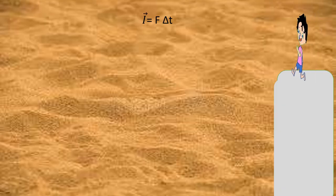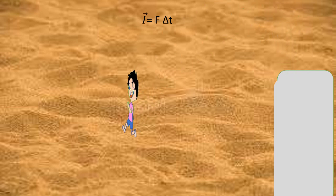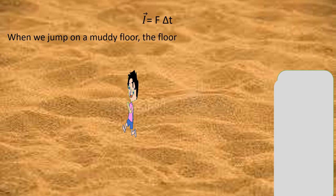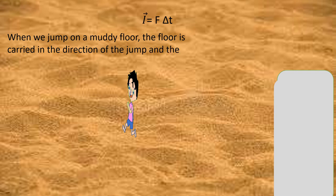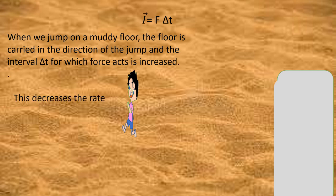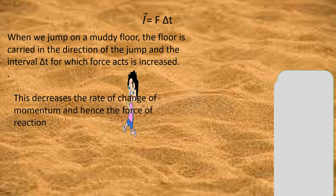Let's see another example. When you jump from a high place onto a muddy floor, you do not get hurt. When we jump on a muddy floor, the floor gives in the direction of the jump and the interval Δt for which the force acts is increased. This decreases the rate of change of momentum and hence the reaction force, so we are unhurt.